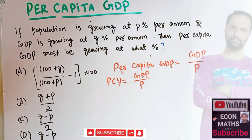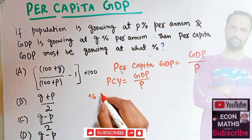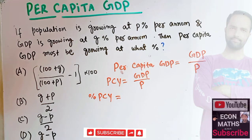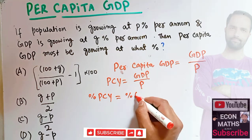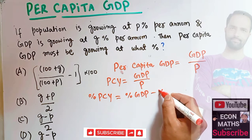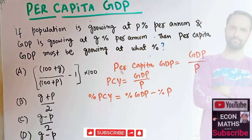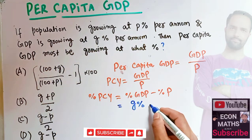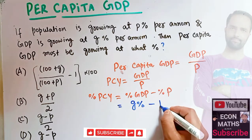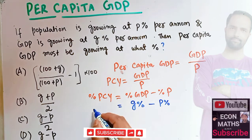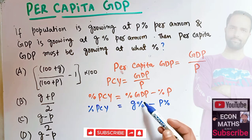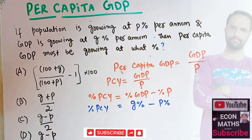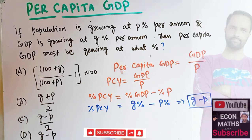The percent change in per capita GDP equals the percent change in GDP minus the percent change in population. GDP is growing at G percent and population is growing at P percent. So the percentage change in per capita income equals G minus P. That means the correct option is G minus P.